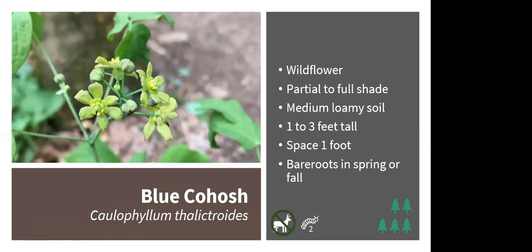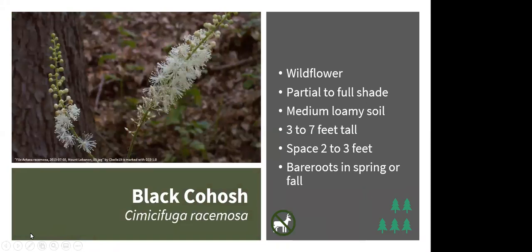Shifting to other woodland wildflowers: blue cohosh is one I added to my garden last fall. It prefers partial to full shade and medium loamy soil but can tolerate clay. It grows 1–3 feet tall and produces unique, stunning green flowers. Plant bare roots in spring or fall. The flowers are replaced by blue berries — toxic to humans, please don't eat them — but birds will eat and spread the seeds. The stems are blue or blue-green in color, and it supports 2 caterpillar species.